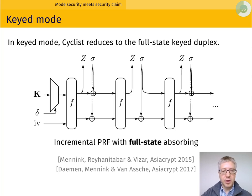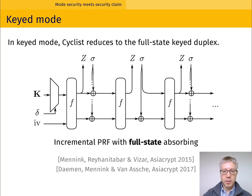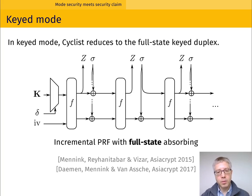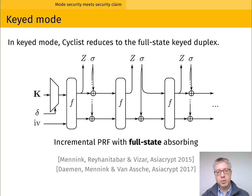When switched to the keyed mode, cyclist reduces to the security of the full state key duplex construction. This construction is similar to the original duplex construction, with the main difference being that input blocks can now be stored into the entire state. Output blocks are still taken only from the first half bits, but the input blocks can modify the entire state. Another difference is that input blocks can override the first half bits instead of being XOR'd.